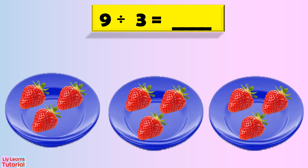Now we go ahead and count how many strawberries are there in each plate. One, two, three. There are three strawberries in each plate. So, nine divided by three equals three.